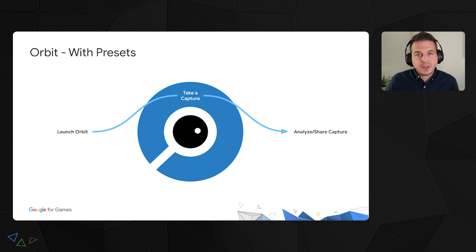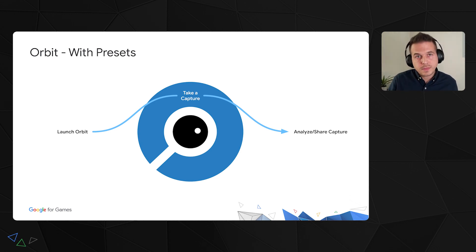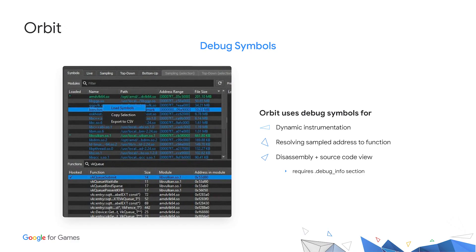Once we're happy with the set of functions identified for our profiling session, we can save them in a preset so we don't have to manually hook those functions again on every capture. You can simply launch Orbit, select a preset, and capture. If you run into a new performance problem, you can always add functions to the preset. A quick note on debugging symbols: in order to profile, we need them — they are Orbit's only requirement. They can live either on your instance or on your local machine. Debug symbols are used by dynamic instrumentation to know where functions are in memory, by sampling to map instructions to symbols, and by the source code and disassembly views for line information.